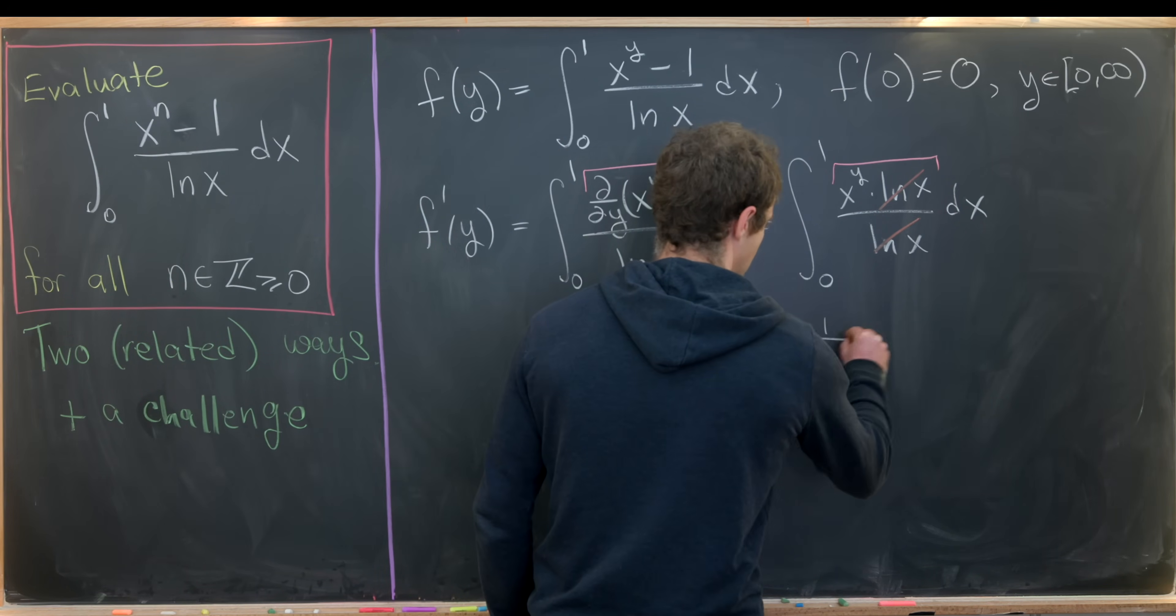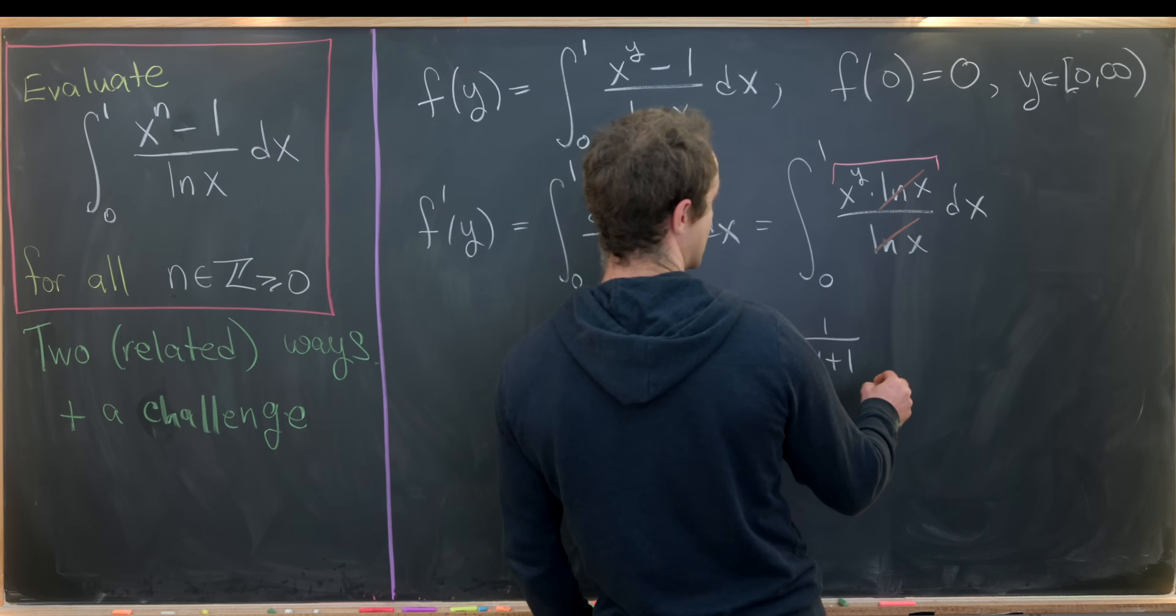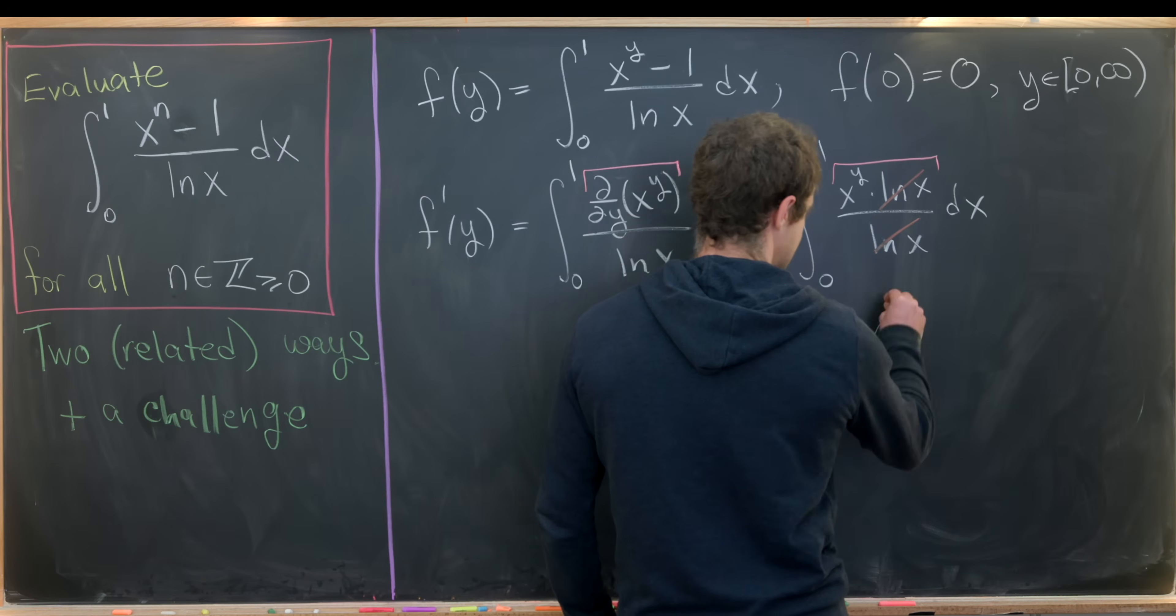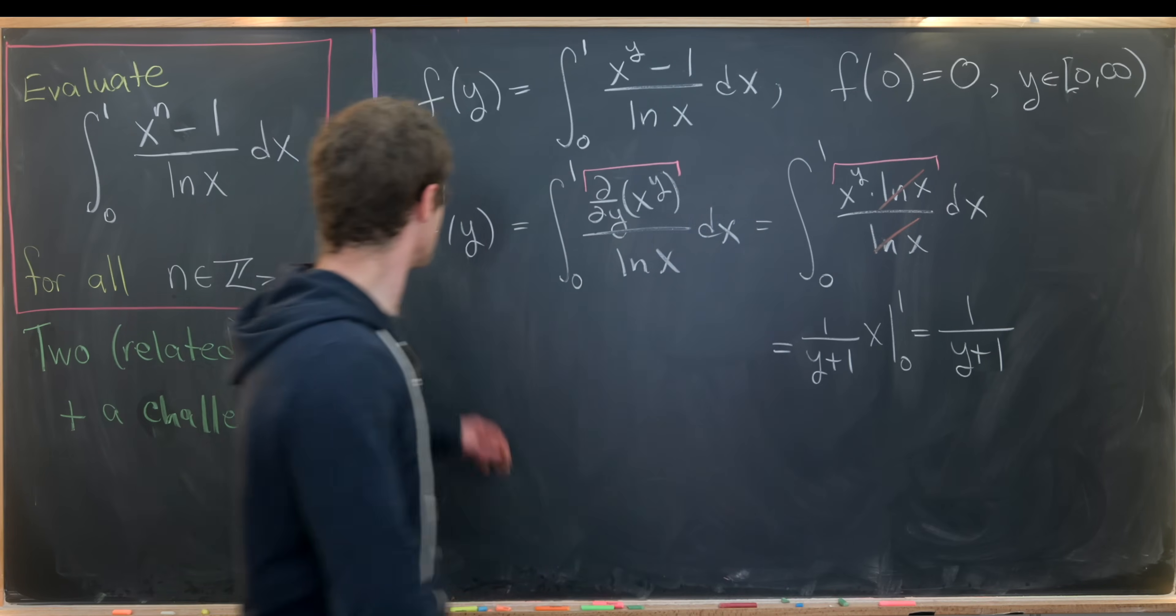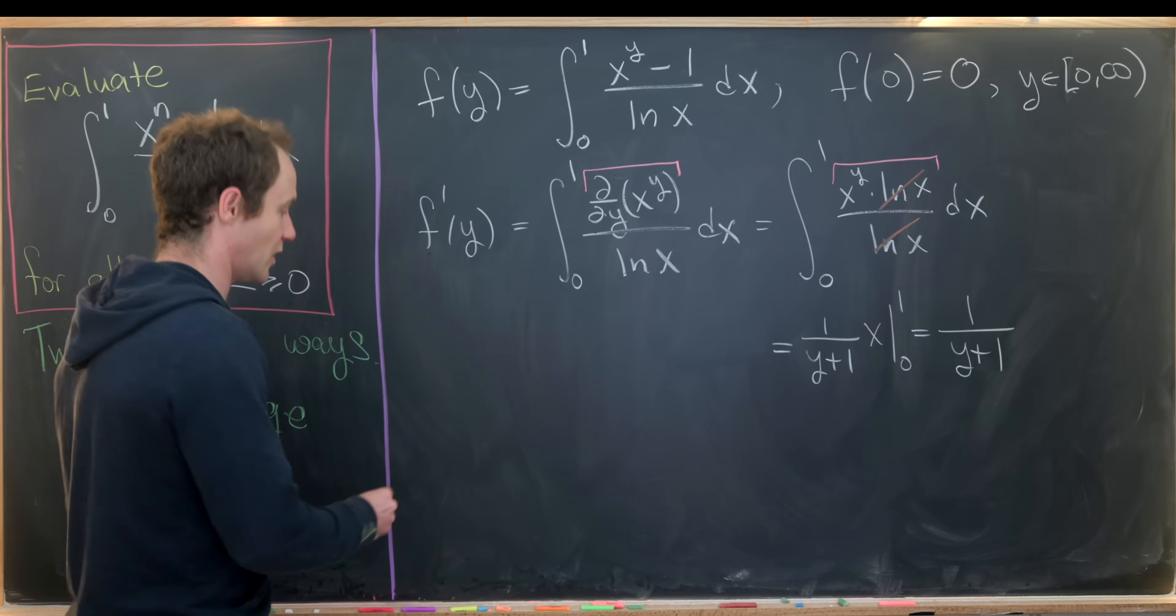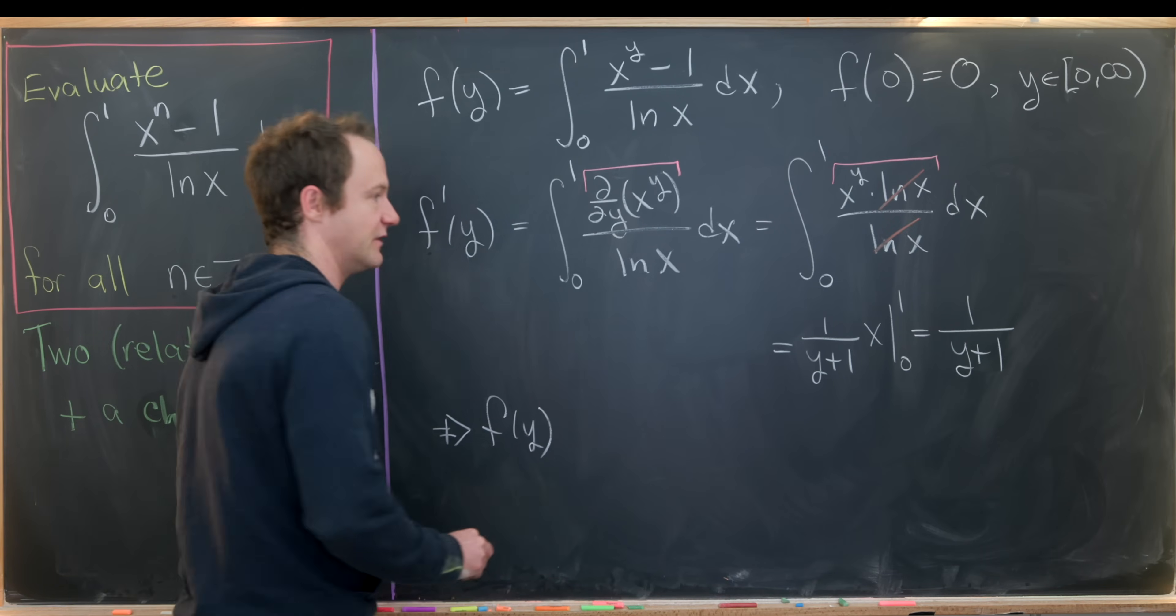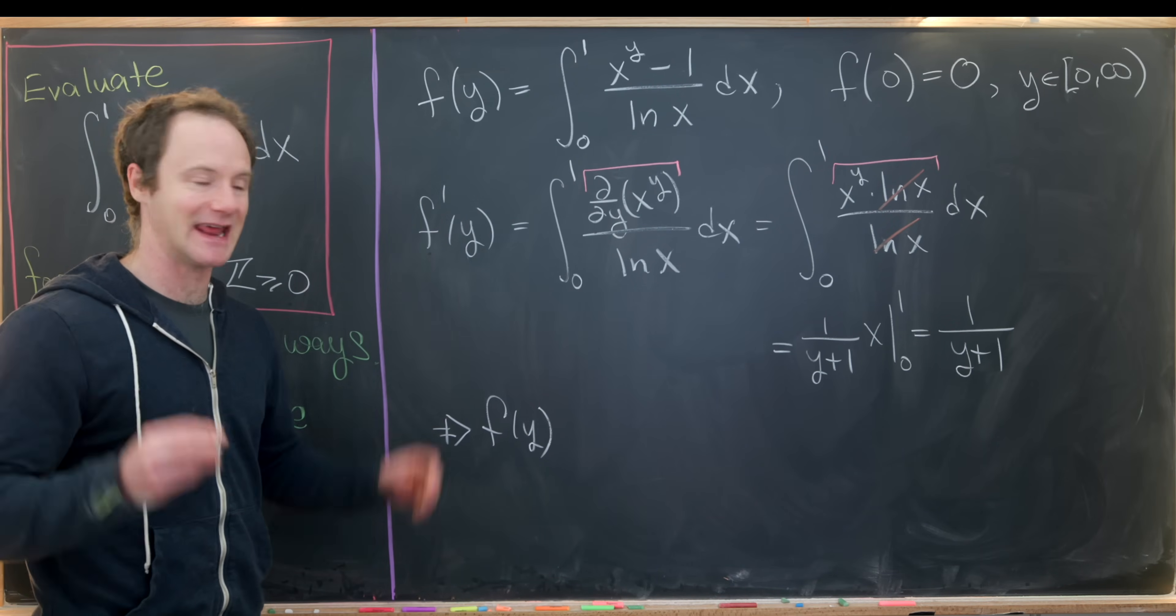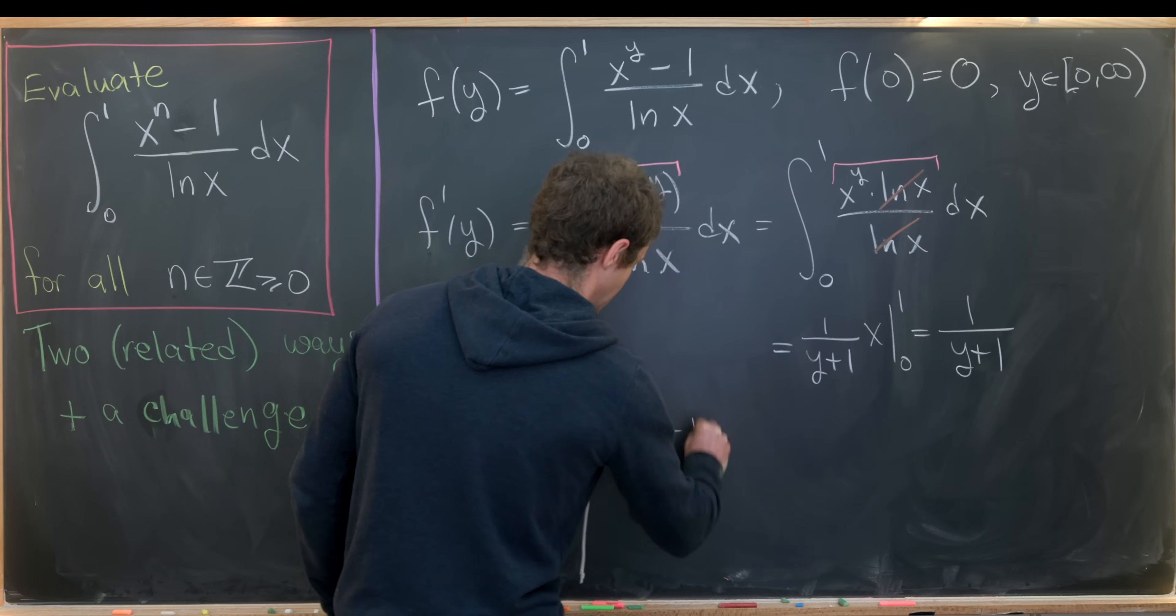So anyway, with the power rule, we have this is 1 over y plus 1 times x evaluated from 0 to 1, which gives us 1 over y plus 1. But that's f prime of y, telling us that f of y is the antiderivative of that, or I should say an antiderivative of that. Here we get the natural log of y plus 1.